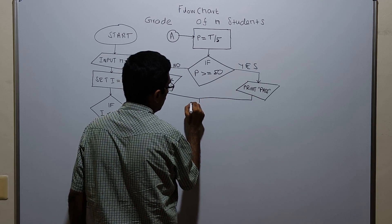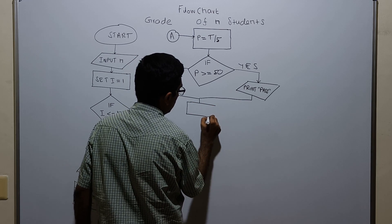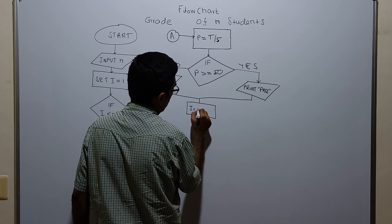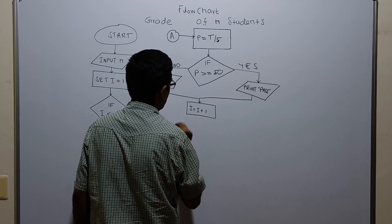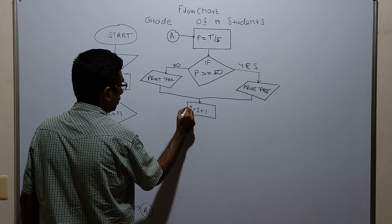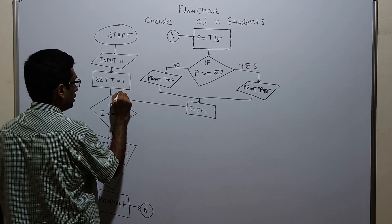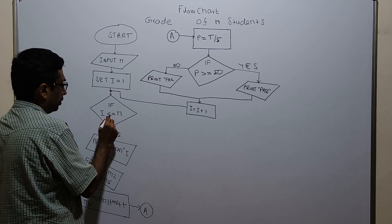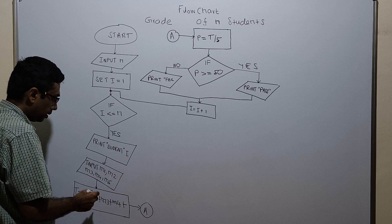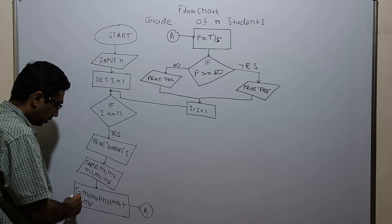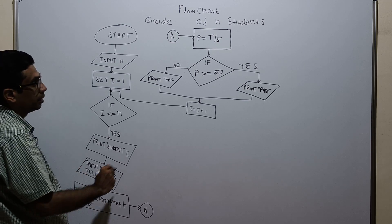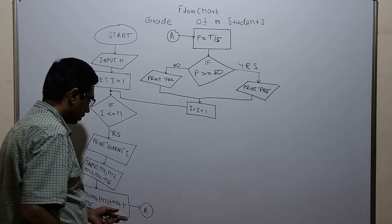After that, I am incrementing i by 1 — i plus 1. I am connecting the flow line back to the decision statement. If i is less than or equal to n, I am printing student i, updating the 5 subject marks, and calculating the total by adding m1 plus m2 plus m3 plus m4 plus m5, then calculating the percentage.